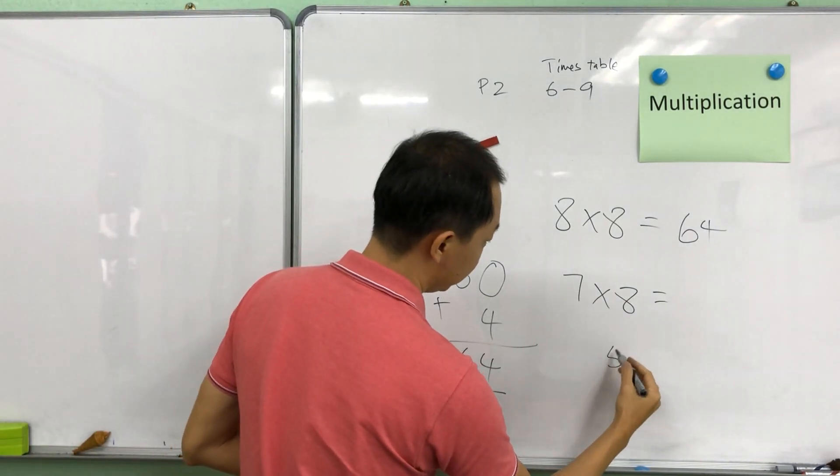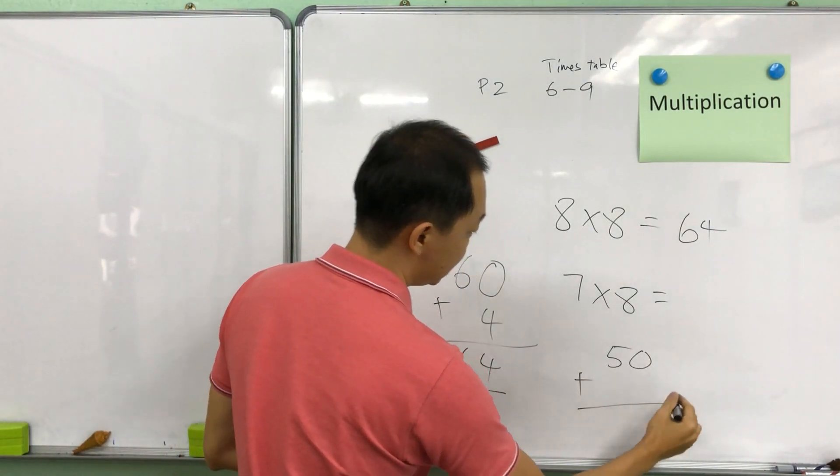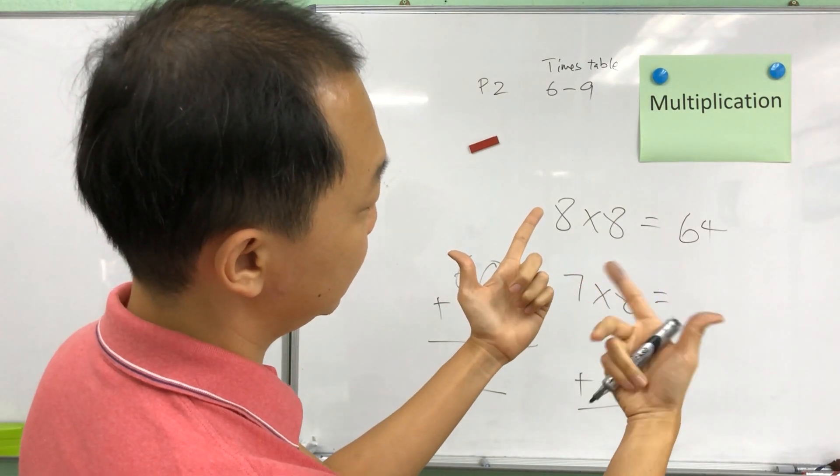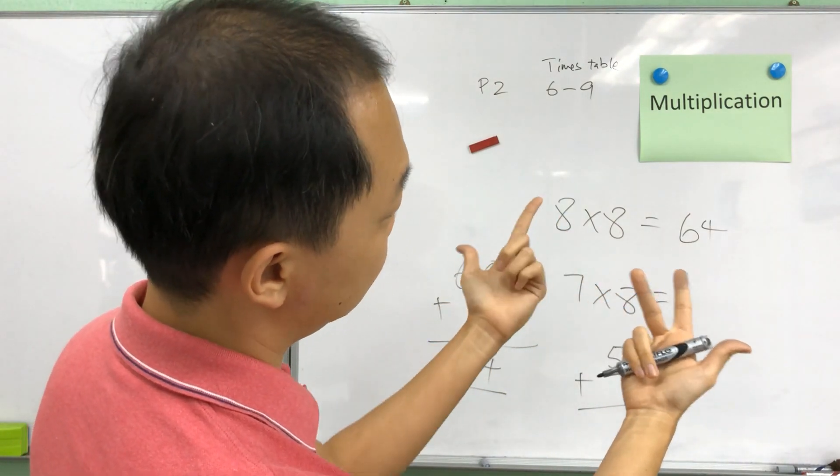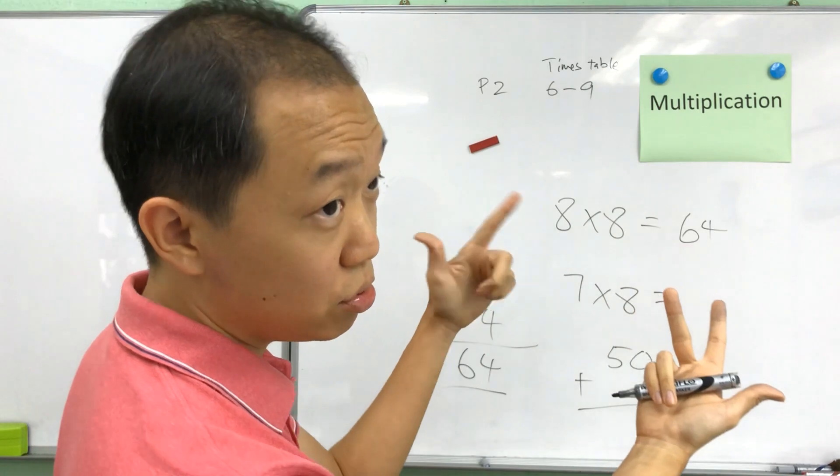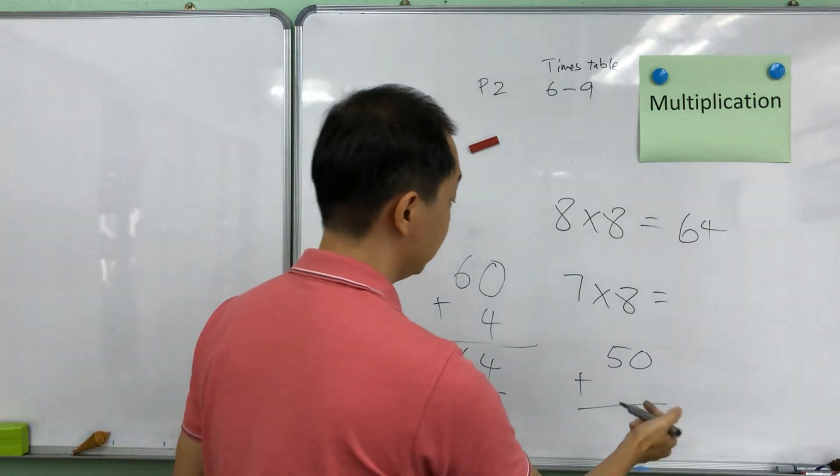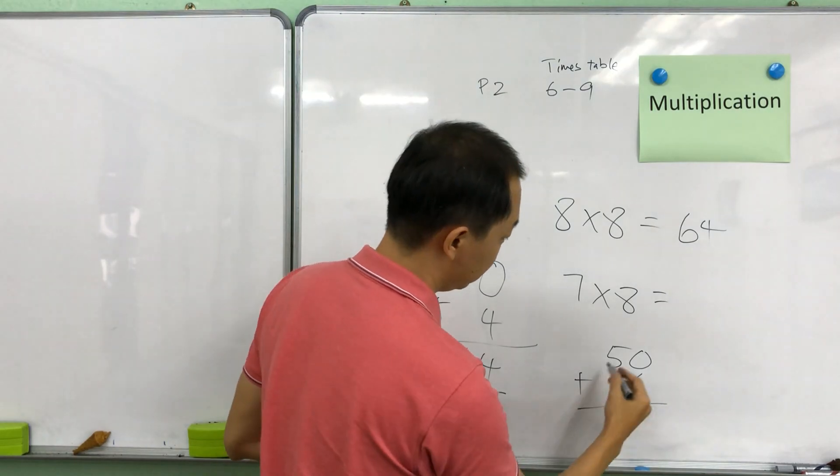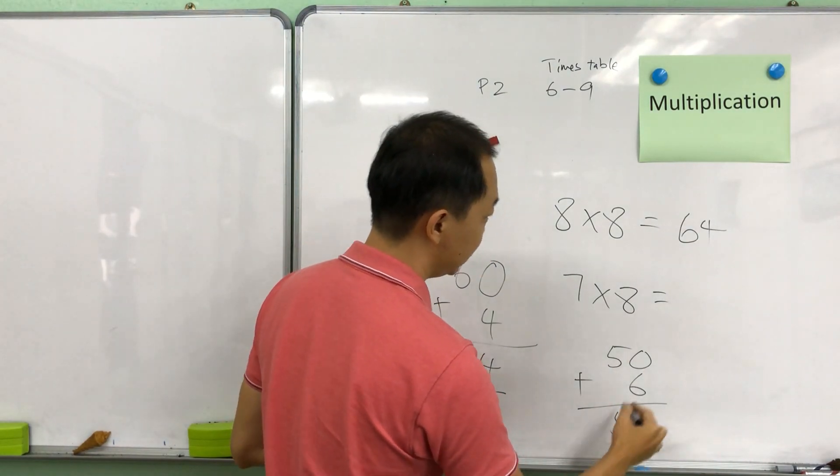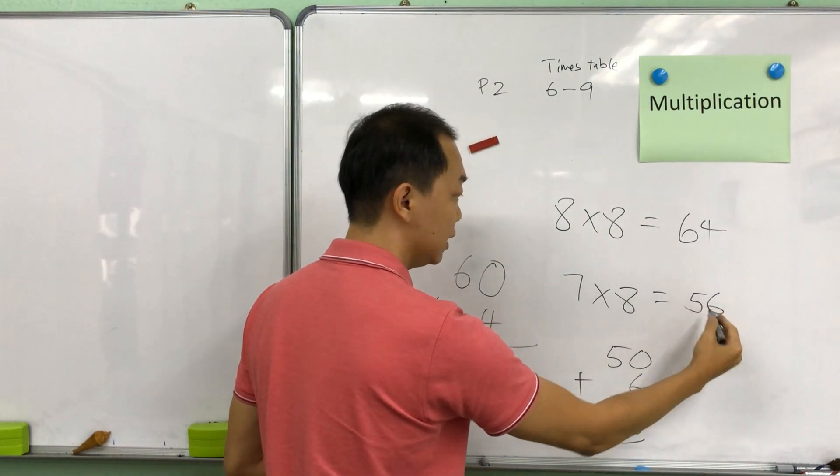Alright so this is like 50 plus, now how many fingers are pointing down? So I have 1, 2, 3 here and then 2 over here. So 3 times 2 is equal to 6. So 50 plus 6 will become 56. So the answer for 7 times 8 is 56.